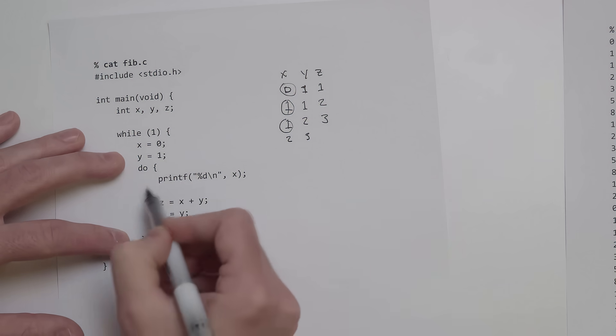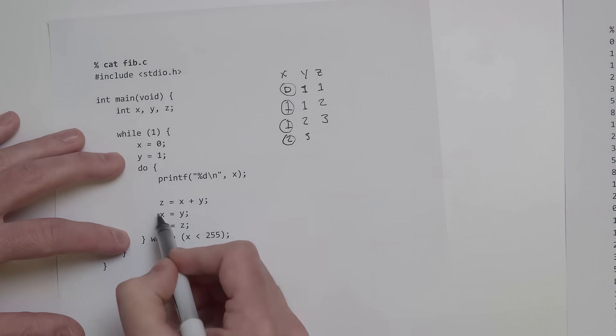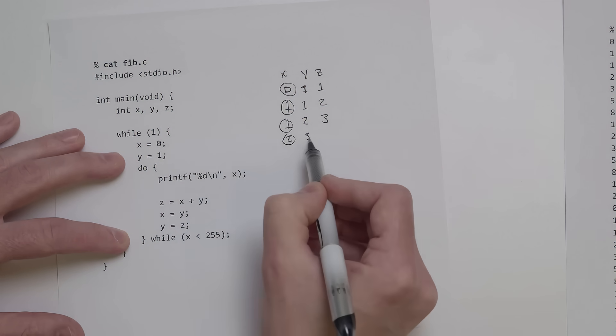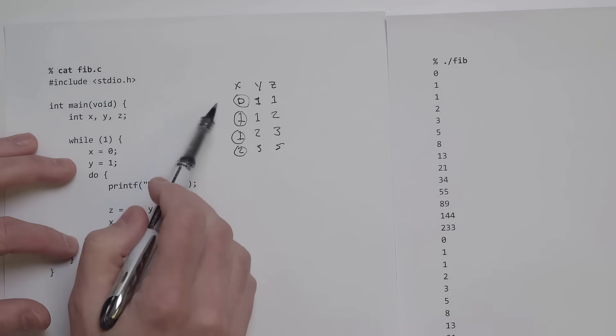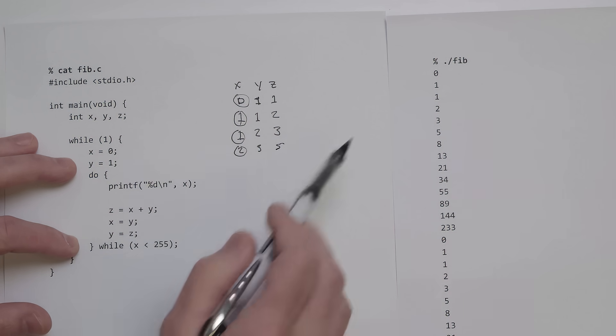We loop through again. Here we print out the 2, compute z as x plus y, so 2 plus 3 is 5, and so on and so forth. You can see as we do this, we're printing out 0, 1, 1, 2, and so forth.